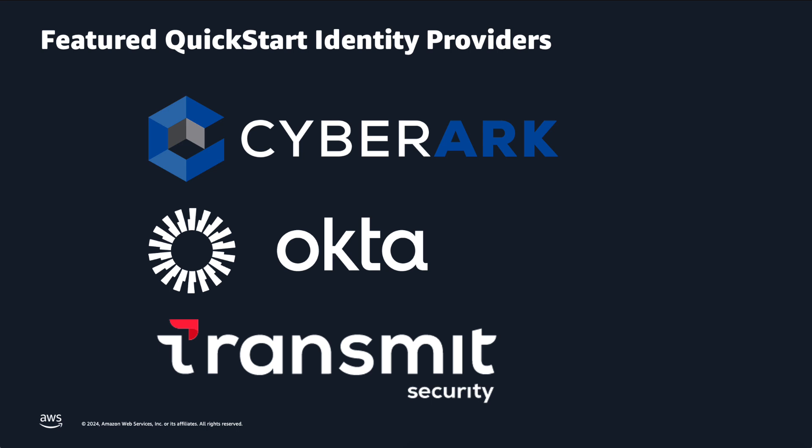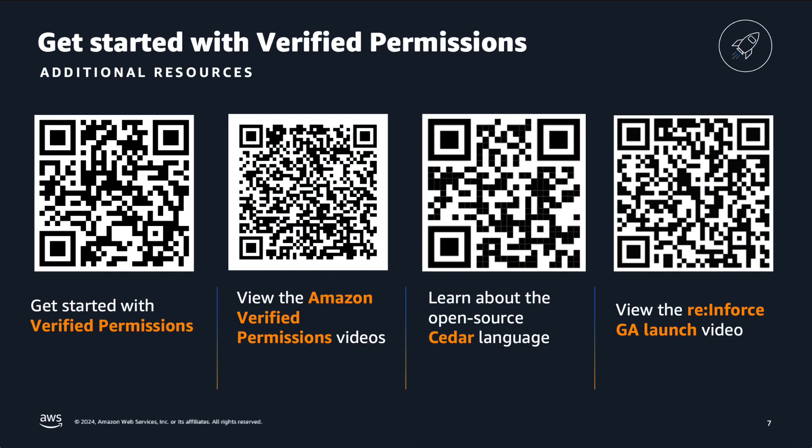With the announcement of Quickstart for OpenID Connect, we want to give a quick highlight to our partners. This allows you to bring your own identity to AWS and leave the last mile of authorization integration to us. This feature works with standard OpenID Connect identity providers, and we are excited to announce that three of the top identity providers — CyberArk, Okta, and Transmit Security — have partnered with us for launch, highlighting how their identity provider works with this feature. You can find more information about Amazon Verified Permissions by following the provided links. Thank you.